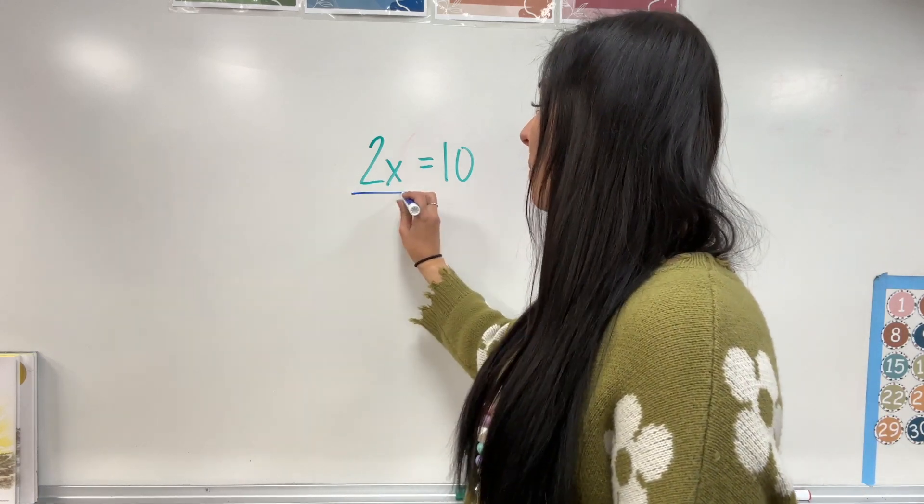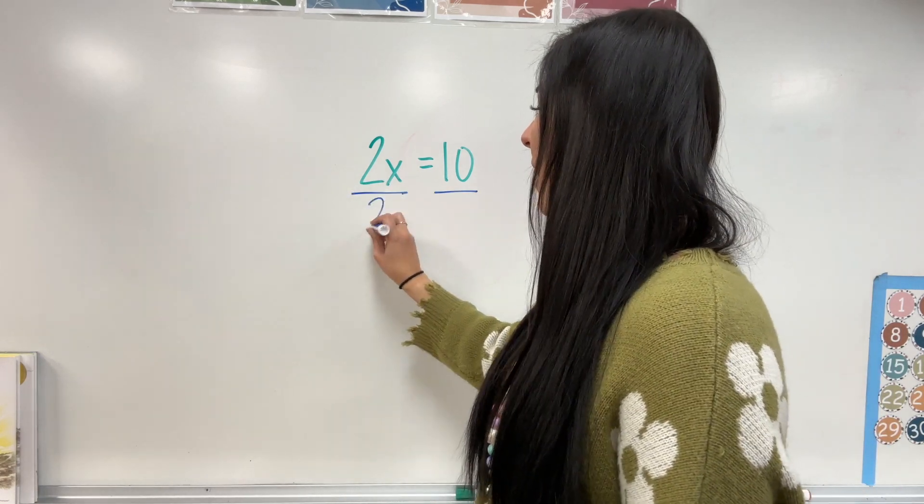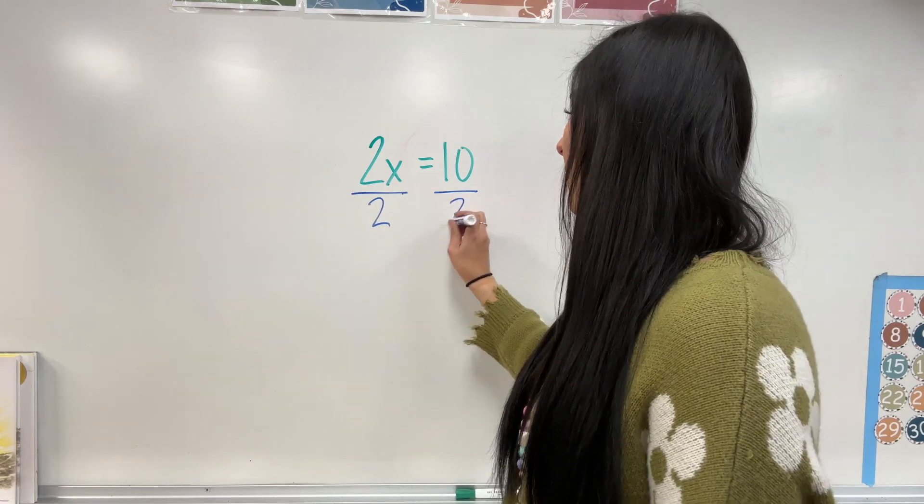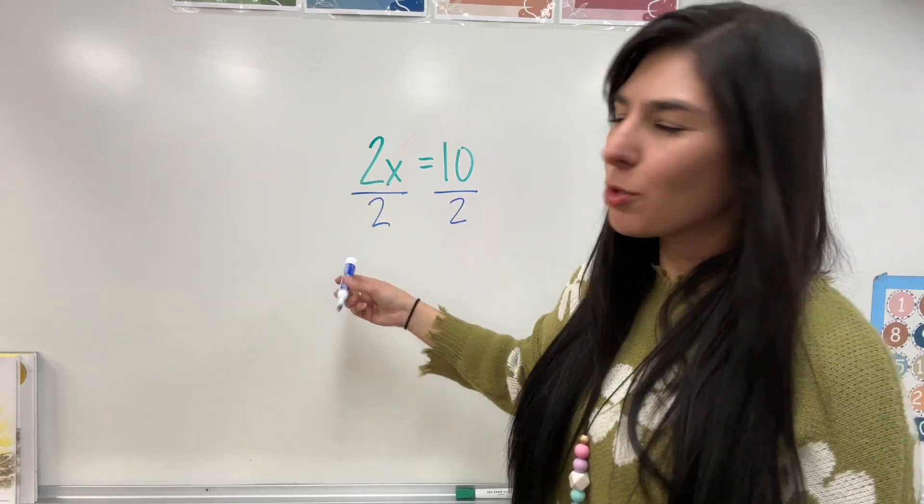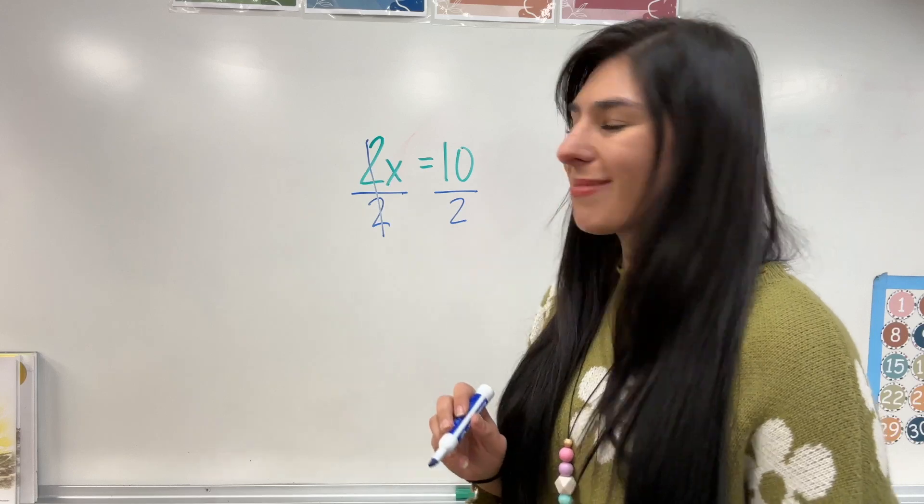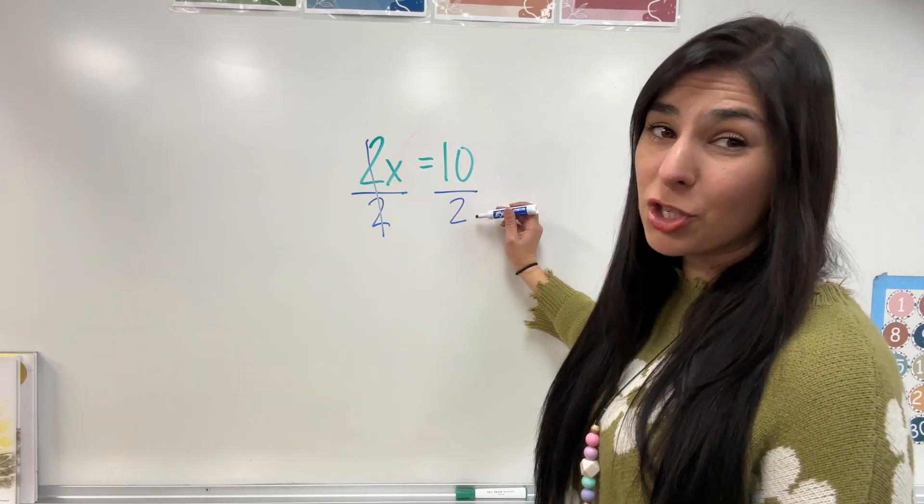So, we're going to divide both sides by 2, by that number. Now, 2 divided by 2, that equals 1, in which case, for multiplication, that cancels out. Now, we have 10 divided by 2.